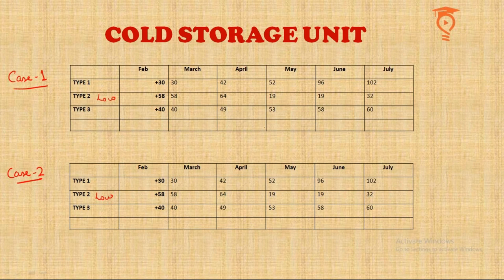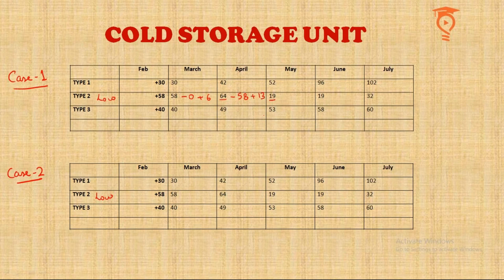Type 2 is confirmed as low quality. At the beginning of March there were 58, meaning 58 were added at end of February. Then 6 more were added to make 64. At the end of April those 58 are disposed of — only 6 remain — then 13 are added to make 19. At end of May, the 6 added in March are disposed of, leaving 13.